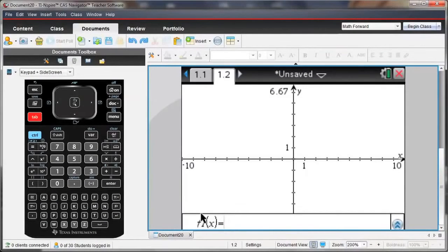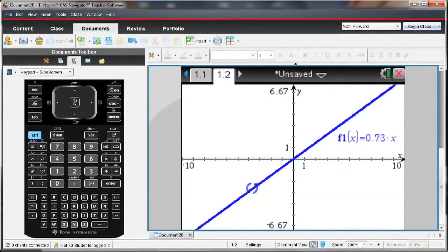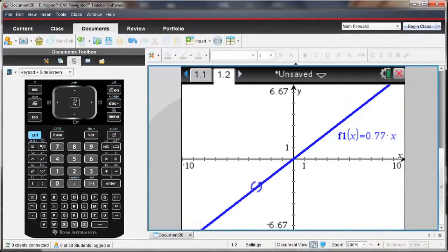So hit the tab key to bring up the function entry line. And I'm just going to start by graphing y equals x. Notice that I can grab and rotate that line, and notice how the slope of the line changes as I do so.